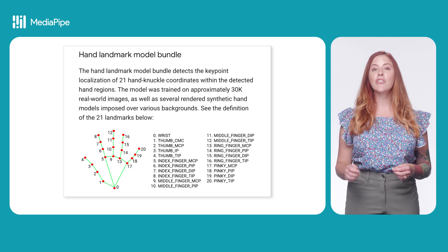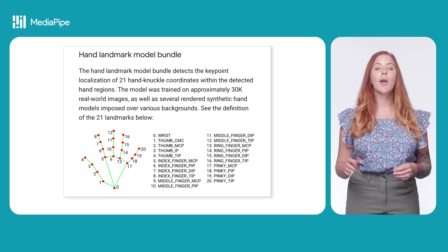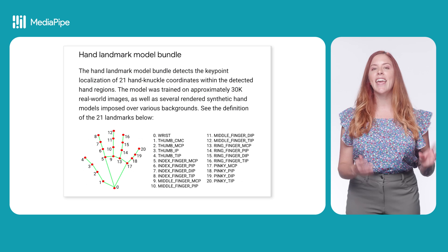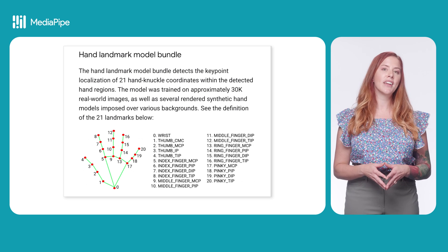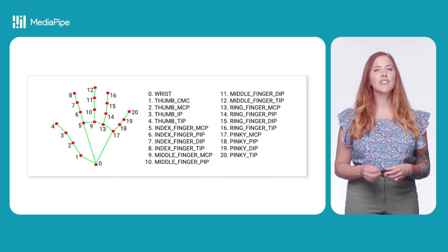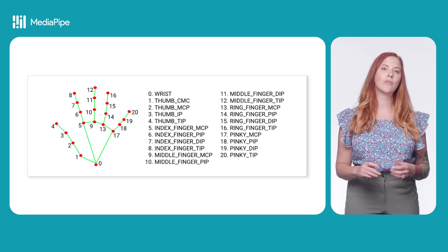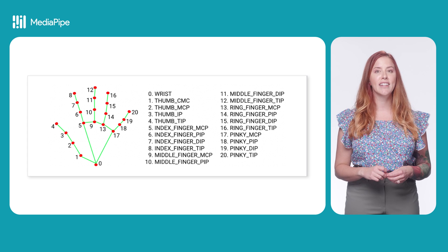To get started using the Hand Landmark Detection task for the web, it's a good idea to know a bit about the Hand Landmarker model. The task uses a model bundle with two packaged models: a POM detection model and a Hand Landmark detection model. The Hand Landmark model detects the key point localization of 21 hand-knuckle coordinates within the detected hand regions.